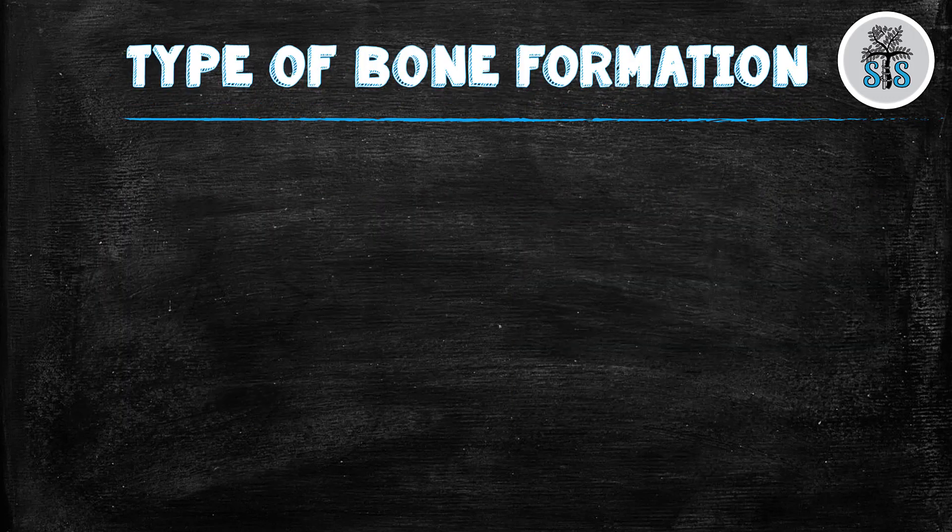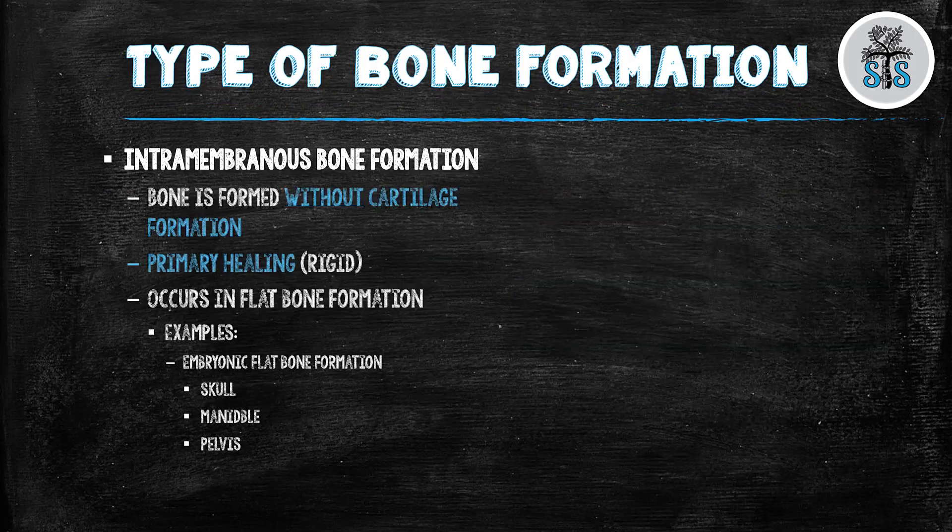Bone has to be formed, and there are two main types. First, intramembranous bone formation — this is bone formed without cartilage formation, but with mesenchymal cells that differentiate into osteoblasts, and the osteoblasts lay down that matrix. This is the type of bone formation found in primary bone healing. The bones formed from this type are our flat bones: skulls, mandibles, pelvis, etc.